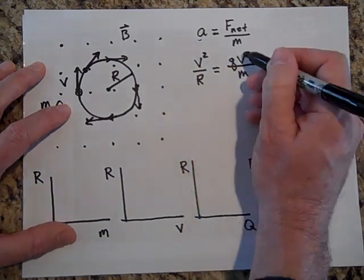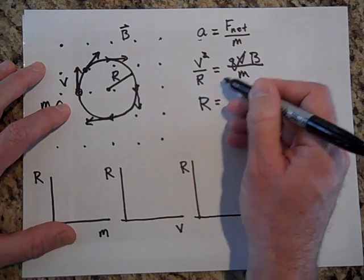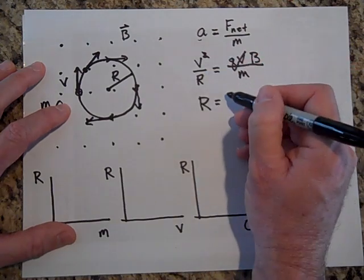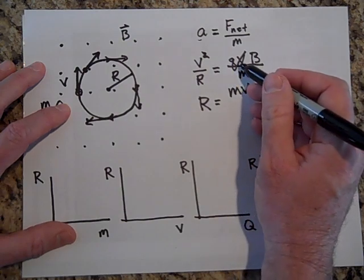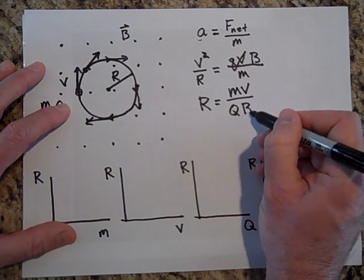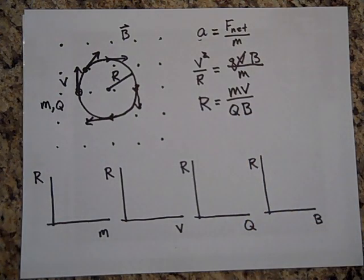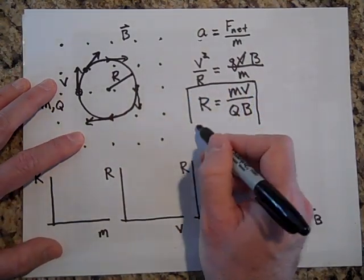Okay, solving for R. Let's get R all alone. So I'll bring R on the other side, the M and the V up top, and the Q and the B below. That's really a capital Q. Okay, so now we have our equation. Not that you want to memorize this equation. It's so quick to derive. But it will help us fill in these now.